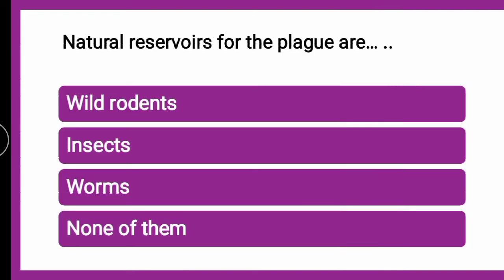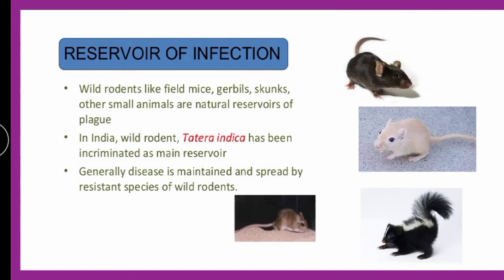The next question is: natural reservoirs for plague are — the options are wild rodents, insects, worms, or none of them. As discussed, plague is transmitted through rat fleas and the hosts are rodents, so the correct answer is wild rodents. As seen in the image, reservoirs include various rodents like mice, gerbils, and skunks. In India, the primary reservoir is rats.